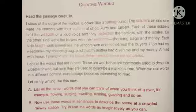Students, here the market is considered as a battleground and the seller-buyer are considered as soldiers. When you visit the market with your parents, how is the scene there? It is crowded with humans. Here in the story also, one scene is described. The people will bargain with the vendors - vendors means shopkeepers - to purchase something. My mother handed me money and I got into the battleground with the list, thinking that I will come out of it successfully. Look at the words that are in bold. These are words that are commonly used to describe a battle or war, but here they are used to describe a market scene. When we use words in different context, our passage becomes interesting to read. Let us try writing like this now.